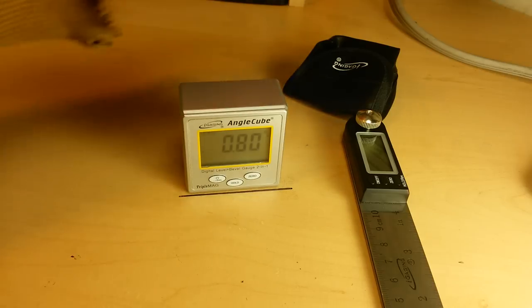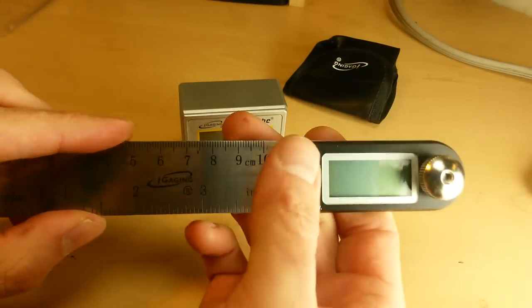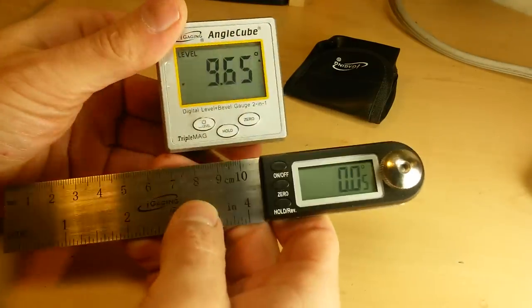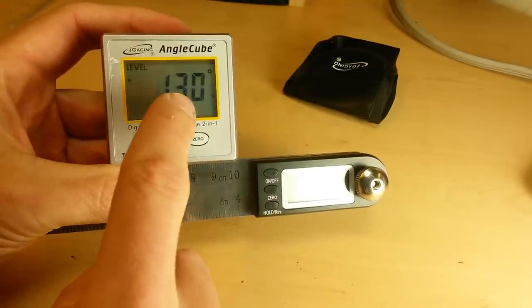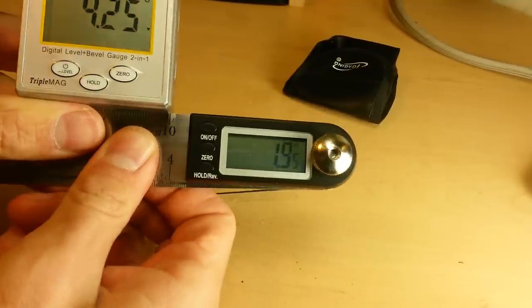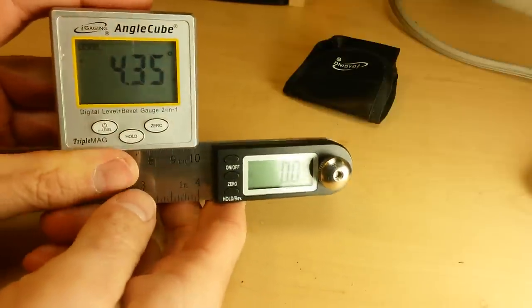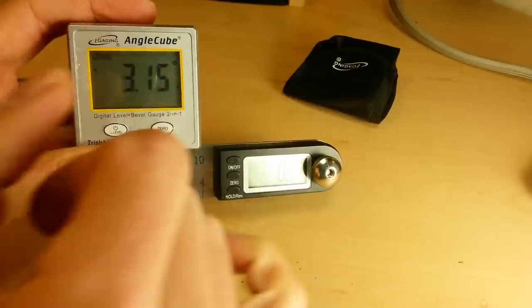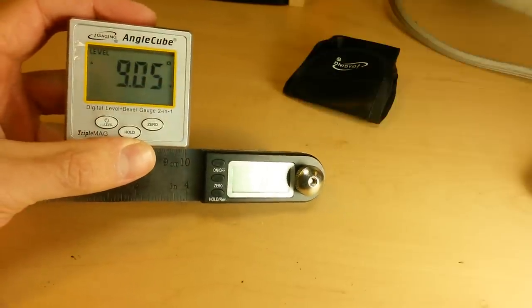So to really put that through its paces today, I'm going to bring out another iGaging product. This is their iGaging digital protractor. And like the angle cube, they both have resolution down to the 50 thousandth of a degree, or 0.05 degrees. You can see there, 0.05 degrees. I think the rated accuracy is like 0.2 degrees, but the resolution is much less. So they are really accurate devices.